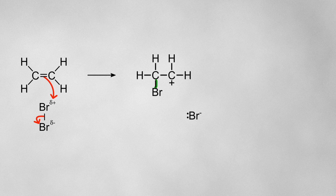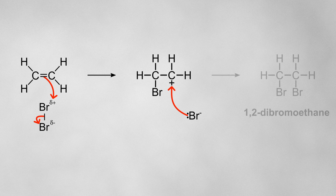Afterwards, a new bond has been formed between the bromine atom and one of the carbons. The other carbon atom has lost electrons where the double bond used to be, so it's left with a positive charge. A lone pair of electrons on the negatively charged bromide ion will be attracted towards this positively charged carbocation, and another bond will form here.